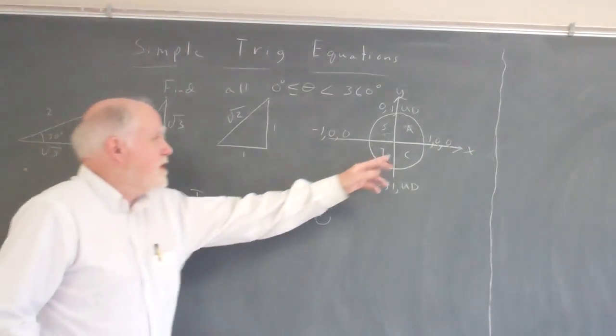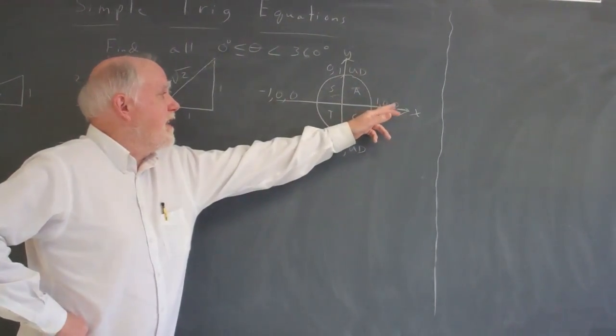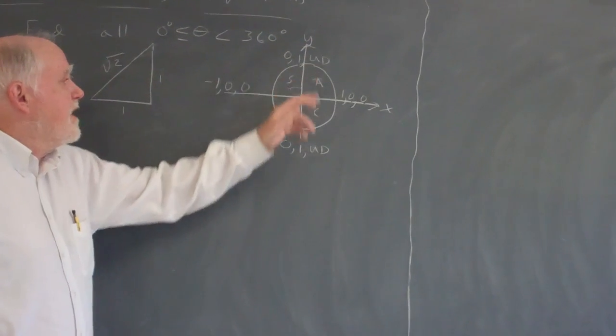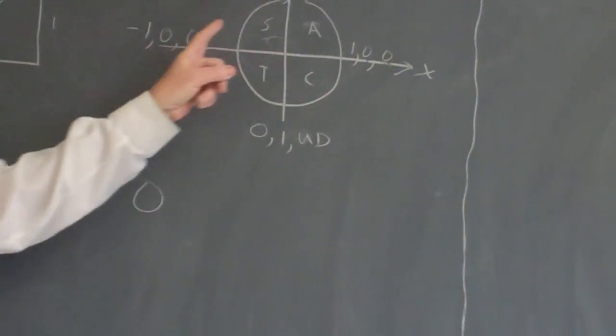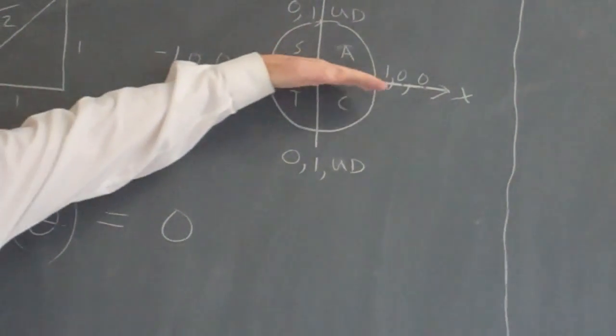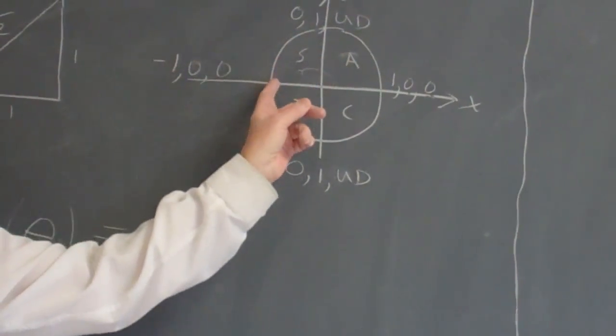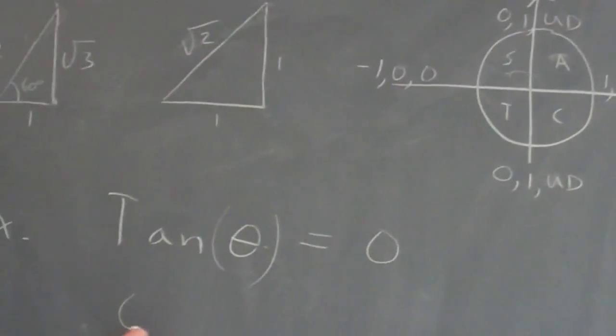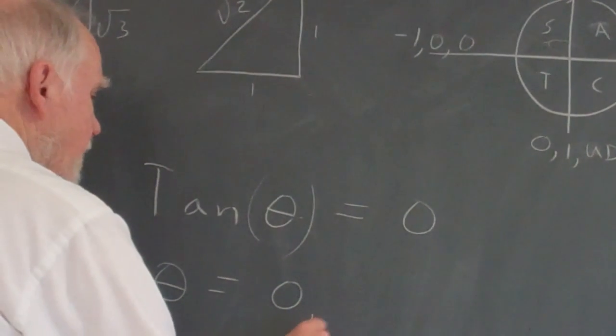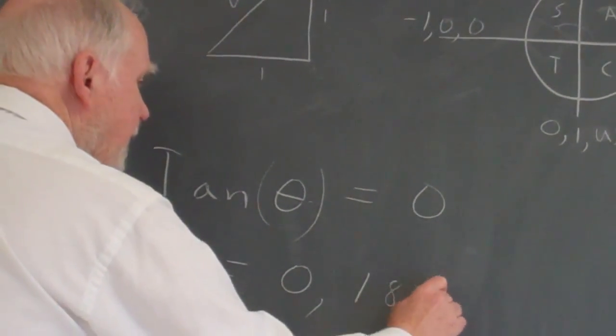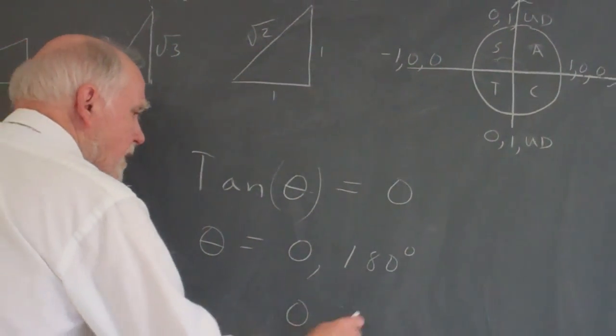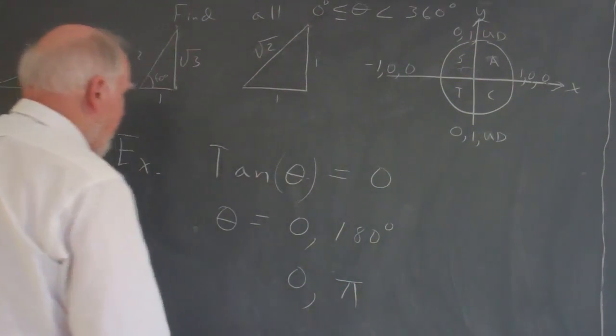Well, I go over my unit circle, and of course this is the cosine, sine, and tangent. Cosine, sine, and tangent, and I notice the tangent is 0 here, and I notice the tangent is 0 here. This is an angle of 0, and this is an angle of 180, so my theta equals 0 degrees and 180 degrees, and in radians, that would be 0 radians and pi radians.